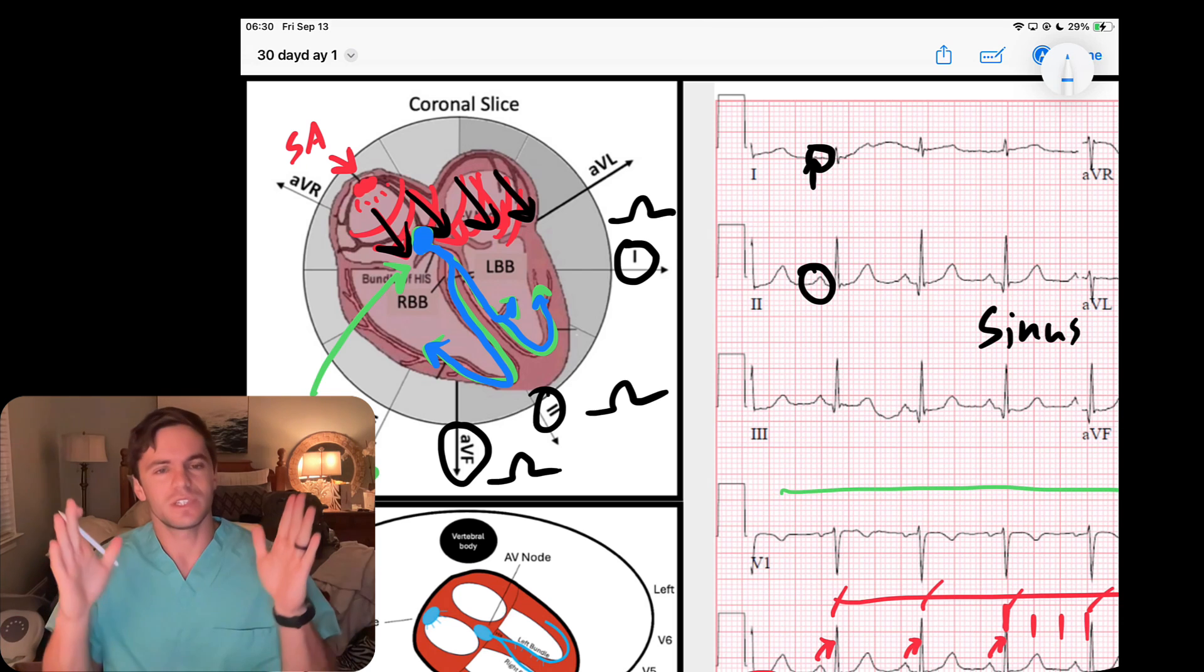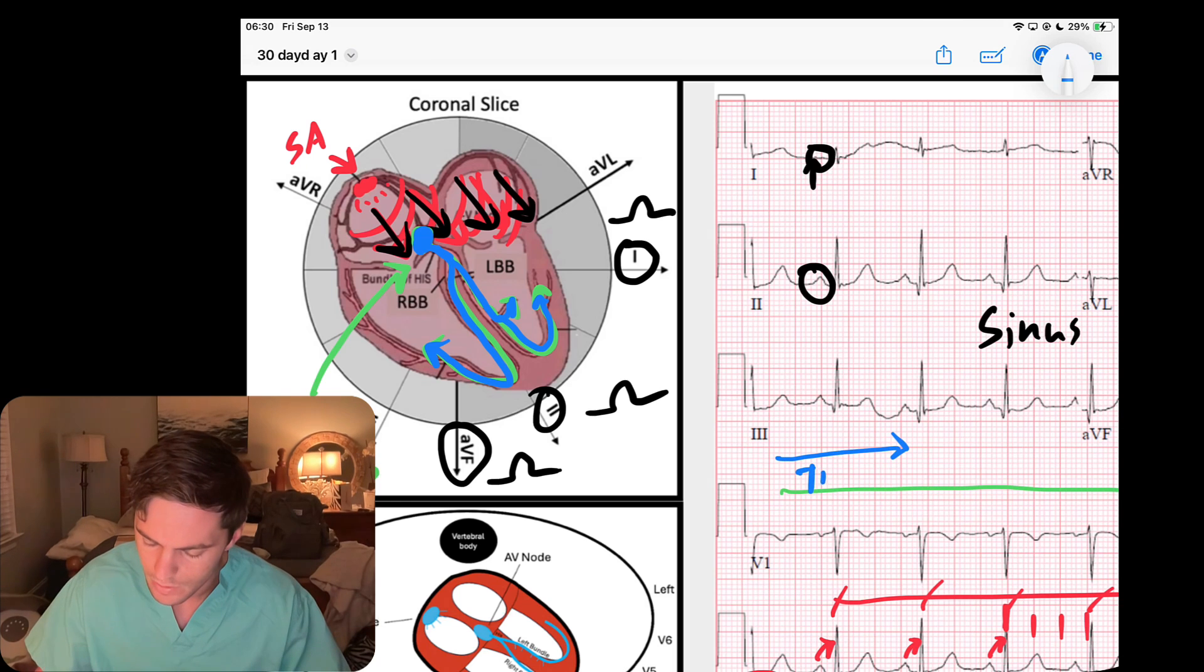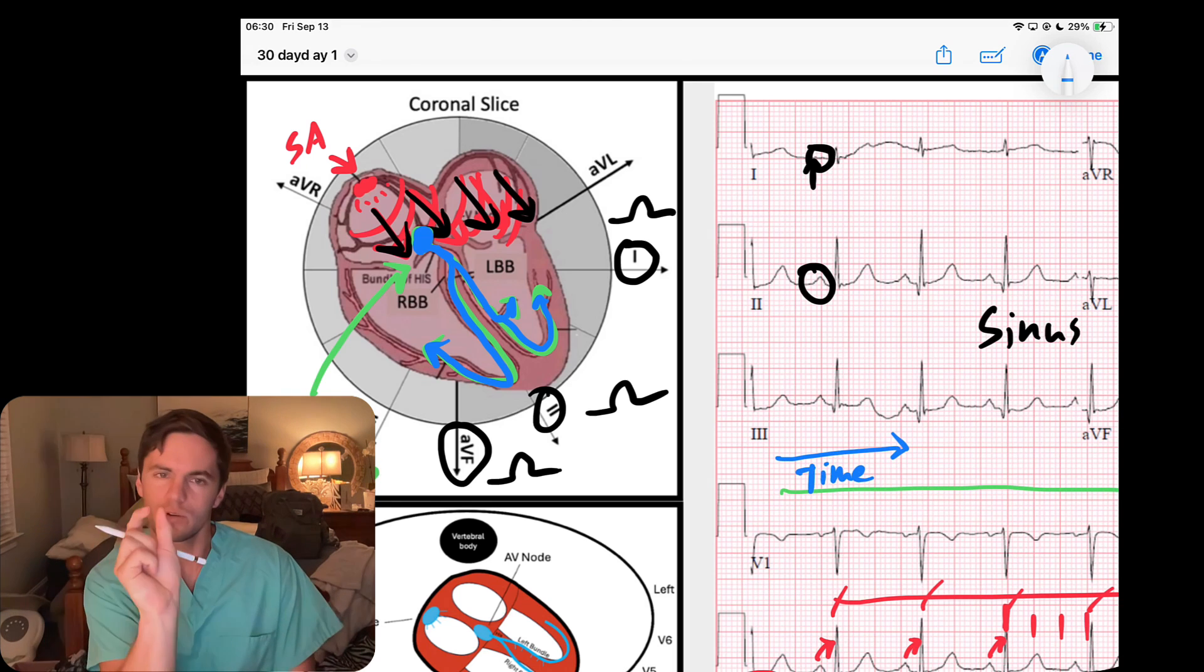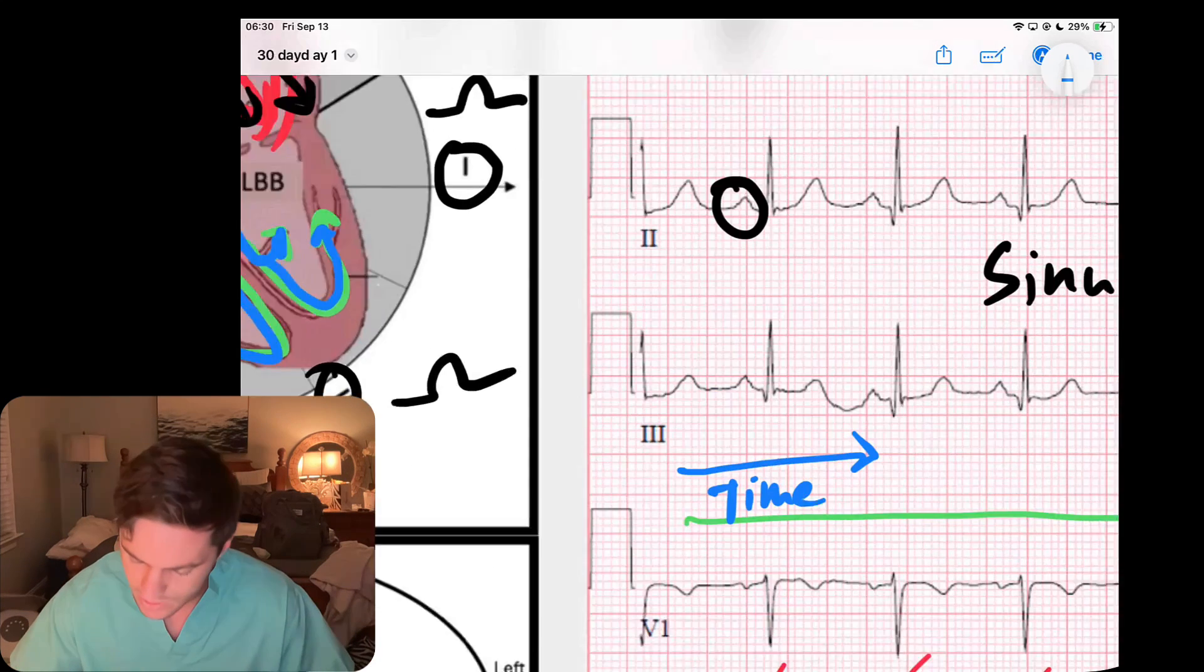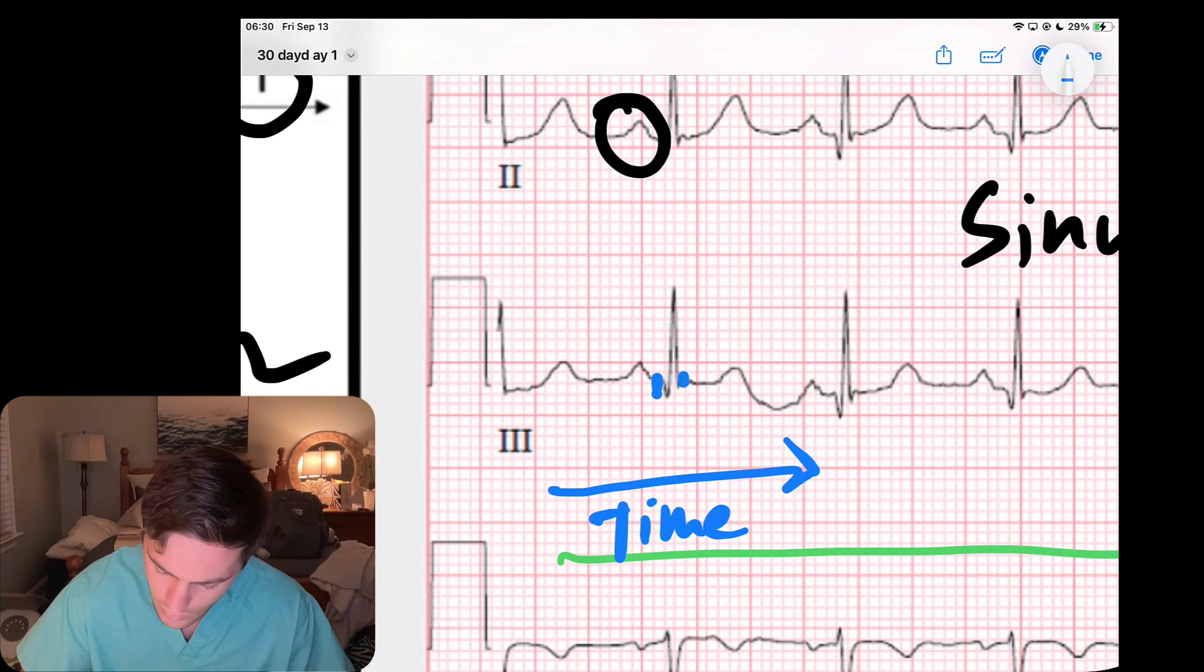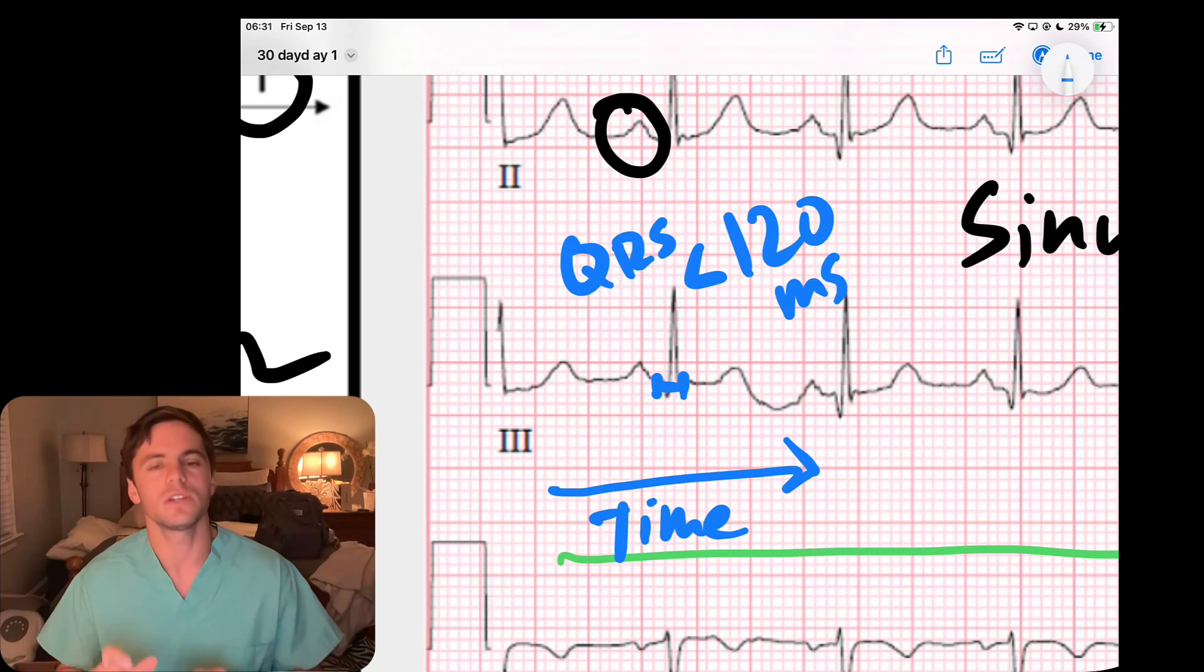On the EKG, that results in a narrow QRS complex because our x-axis here is time. If we had a narrow QRS complex, we say throughout time it's going quickly. Maybe I'll look right here and I see that my QRS complex width from beginning to end—we want to look for a QRS that is less than 120 milliseconds.